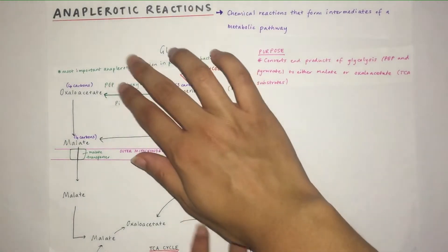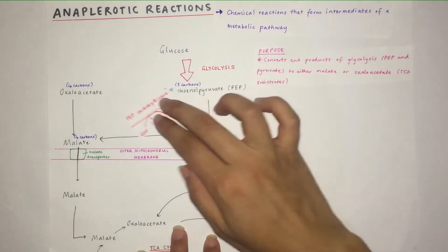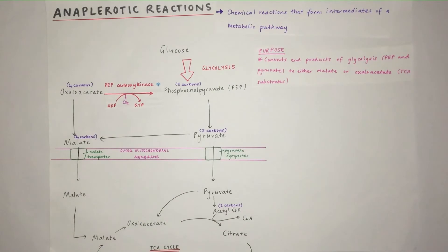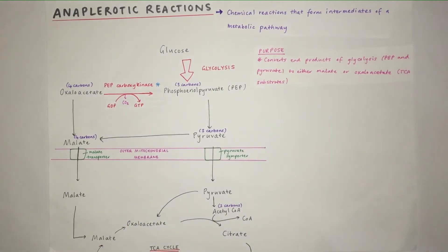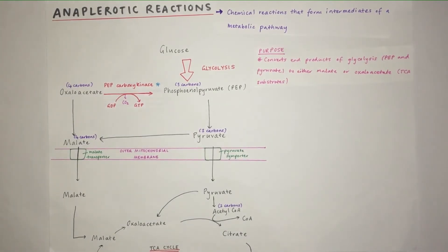I would remember this enzyme, PEP carboxykinase. Oxaloacetate becomes PEP by PEP carboxykinase, and a GDP is converted to GTP in this process, and a CO2 is cleaved off. We've got to get that CO2 away because oxaloacetate has four carbons while PEP has three carbons, so we lose a carbon in this process.